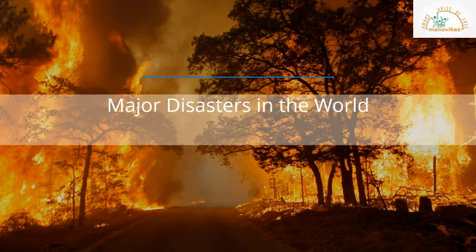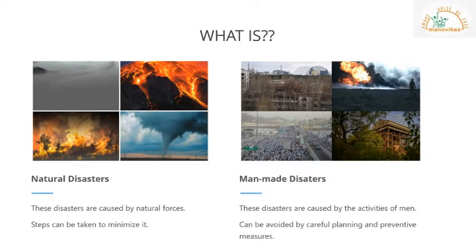Today we'll be talking about the major disasters that have occurred in the world. There are two types of disasters: natural disasters and man-made disasters. Natural disasters are caused by natural forces and are hardly in any control of man. Some common natural disasters are earthquakes, landslides, floods, droughts, cyclones, and tsunamis. These disasters can cause enormous loss to life and property.